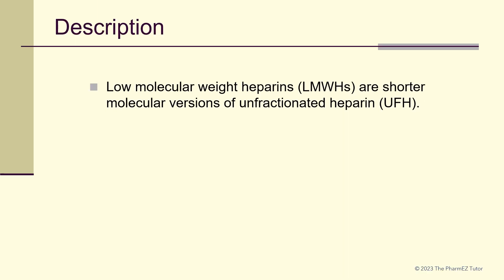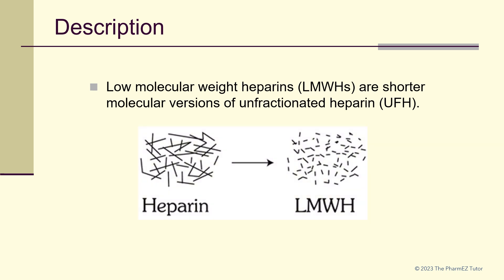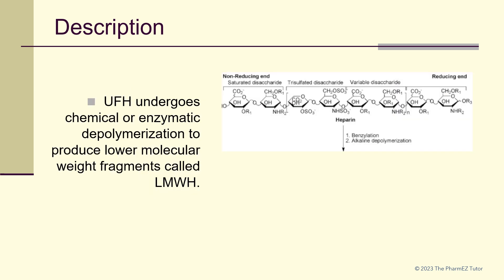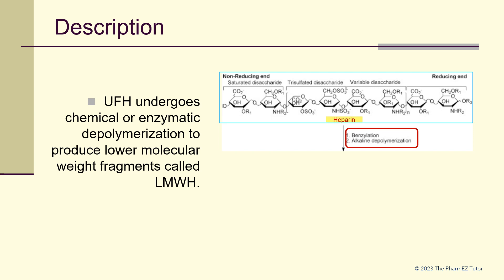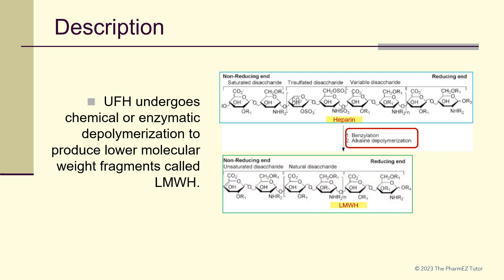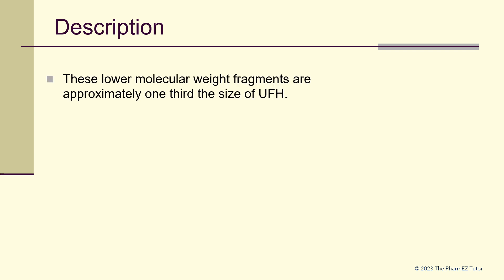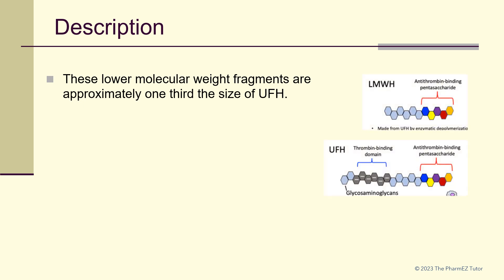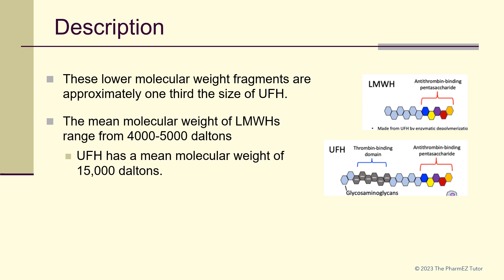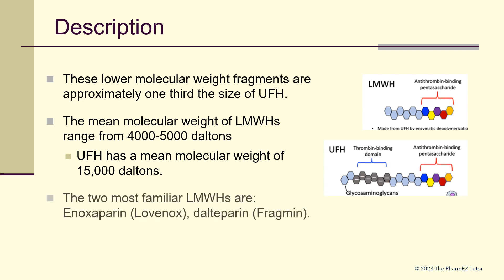Low molecular weight heparins are shorter molecular versions of unfractionated heparin. Unfractionated heparin undergoes chemical or enzymatic depolymerization to produce lower molecular weight fragments called low molecular weight heparin. These lower molecular weight fragments are approximately one-third the size of unfractionated heparin. The mean molecular weight of low molecular weight heparins ranges from 4,000 to 5,000 daltons, compared to 15,000 daltons for unfractionated heparin. The two most familiar low molecular weight heparins are enoxaparin (Lovenox) and dalteparin. From this point forward, we will be referring to enoxaparin as the main low molecular weight heparin used in practice.